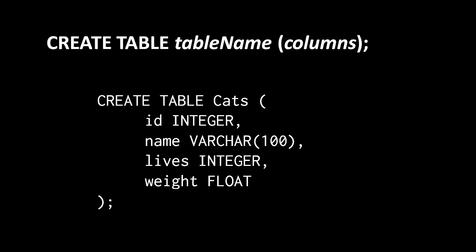In our example we created a primary key column called id of type integer, as we generally should for basically all tables. What we really want for primary keys is for the database to auto-generate these integer numbers for us, so we don't have to track which ids we've used. We do this by declaring the integer column as a primary key with the reserved words primary key. When we add new rows to the cats table, we don't have to provide an id — it gets auto-generated, and the database ensures the id generated is unique and not already used in that table.